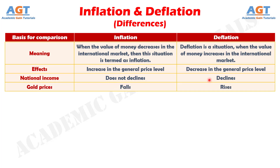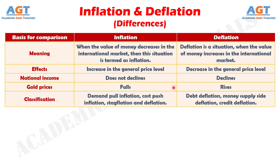Number four: gold prices fall with inflation, whereas gold prices rise with deflation. Number five: inflation can be classified as demand-pull inflation, cost-push inflation, stagflation, and deflation, whereas deflation can be classified as debt deflation, money supply-side deflation, and credit deflation.